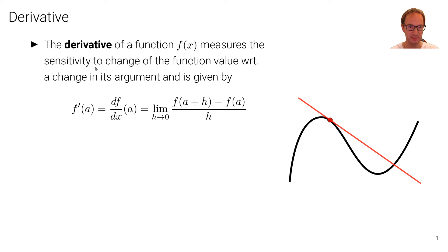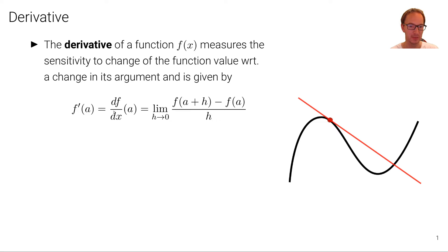The derivative of a function f of x measures the sensitivity to change of the function value f with respect to a change in its argument x, and is given by the limit of f(a + h) minus f(a) over h as h goes towards zero. If this limit exists, then the derivative exists. We write the derivative as f prime evaluated at a, or df with respect to dx evaluated at a — just two different notations for the same thing.